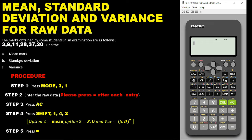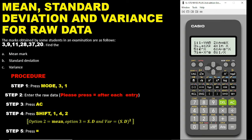The first step for raw data to find the mean: you press Mode and then pick option 3, which is Statistics. Then you pick option 1. Note that option 1 is for statistics, the e-plus-bx option is for arithmetic progression, and option 6 is for geometric progression. Since this is a statistical question, we pick option 1.